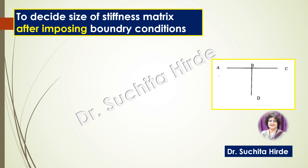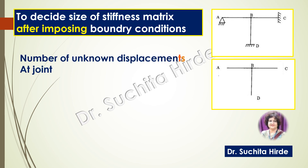Now let us understand how to decide the size of the stiffness matrix after imposing boundary conditions. Imposing boundary conditions means assigning the supports to the joints. In this case there are three supports at A, C and D. To decide the size of the stiffness matrix we have to count the number of unknown displacements at every joint. If we neglect axial deformation, there is one unknown displacement at every hinge support, roller support, and at all joints. At a fixed support the number of unknown displacements is zero.